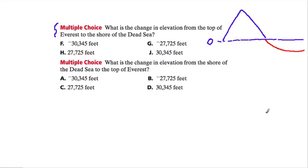The Dead Sea actually goes below sea level. What they're saying is, what is the change in elevation from the top of Everest? So you're starting here and you're going down to the shore of the Dead Sea. You're standing on the shore of the Dead Sea, which happens to be below sea level.